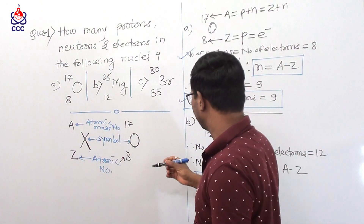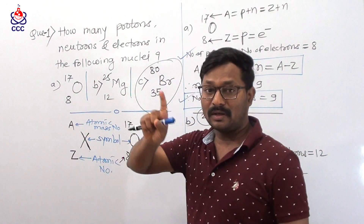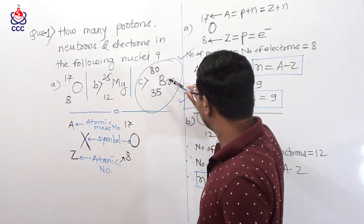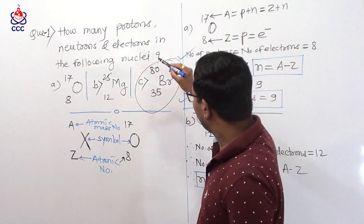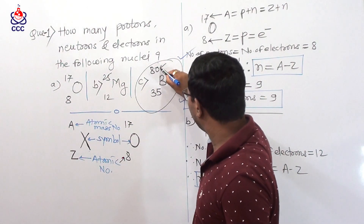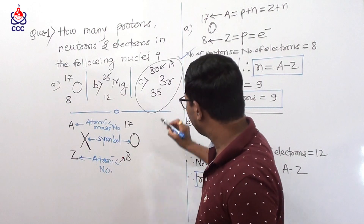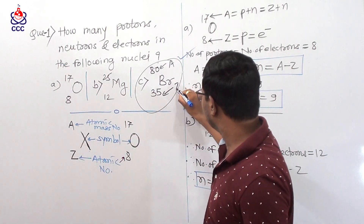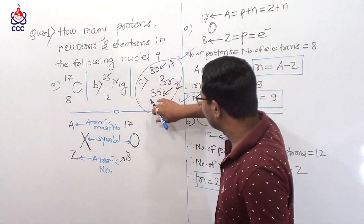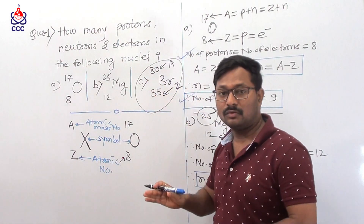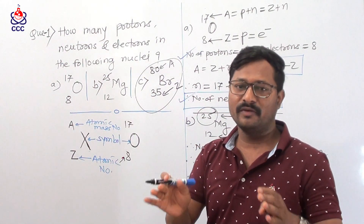Now in the third case, the example is bromine with atomic number 35 and atomic mass number 80. So 80 is the atomic mass number and 35 is the atomic number. In this case, we are going to find number of protons, number of electrons, and number of neutrons.